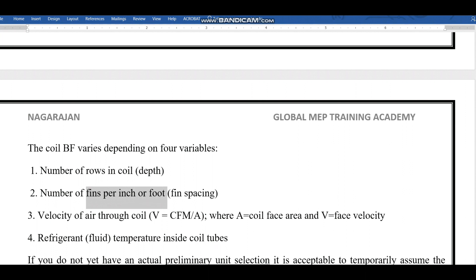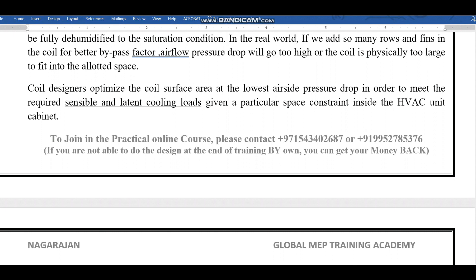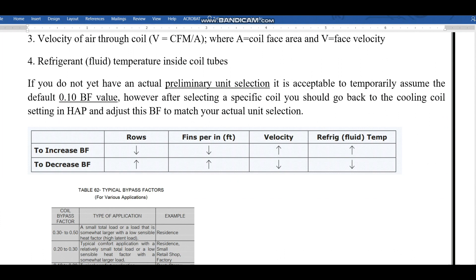A few main factors which affect the bypass factor: first, the number of rows in a coil; number of fins per inch, the fin spacing; velocity of air through the coil. Normally in the drawing they will mention like the face velocity in the coil should not exceed 2.5 meters per second. Finally, the refrigerant temperature inside the coil. Coil designers optimize the coil surface area at the lowest air side pressure drop in order to meet the required sensible and latent cooling load given a particular space constraint inside the HVAC unit cabinet.